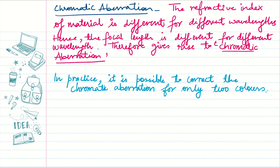Let's find the condition first. We know the refractive index of a material is different for different wavelengths, so the focal length is different for different wavelengths. This property — how the refractive index varies with wavelength, resulting in different focal lengths for different colors — gives rise to chromatic aberration. In practice, it is possible to correct the chromatic aberration for only two colors.